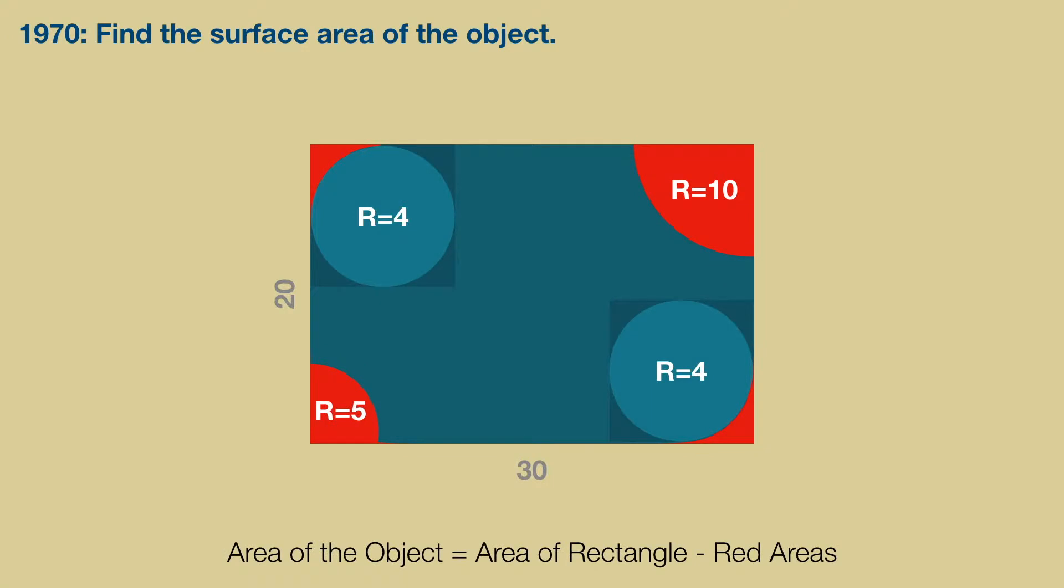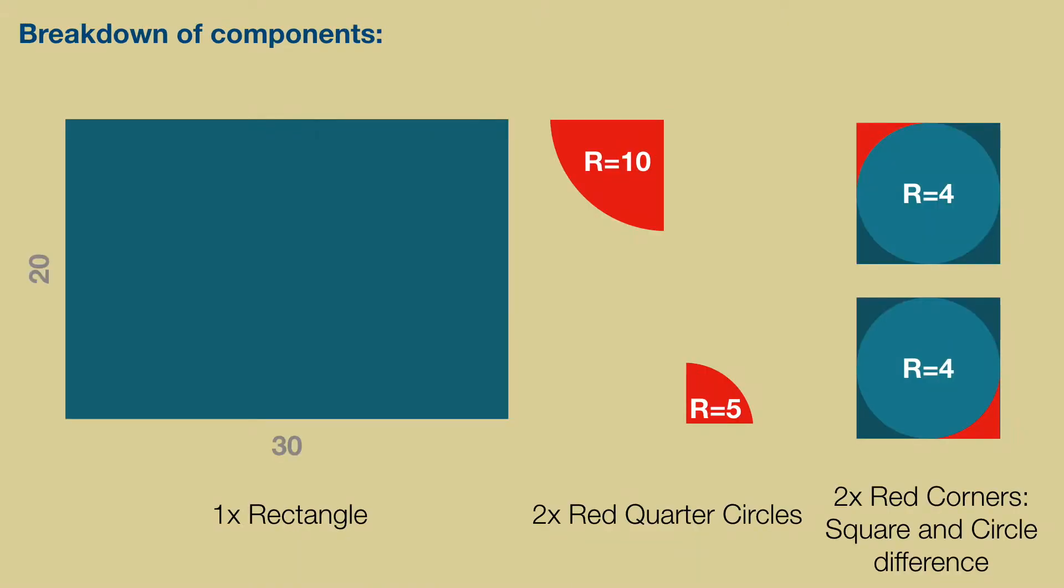Let's recolor this figure. The problem then boils down to removing the red areas from the rectangle to find the area of the object. So if we refactor the problem some more, we now see that there are three components: a rectangle, two quarter circles where the radii are 10 and 5, and the two corner areas formed by the square and the circle where the radius is 4.